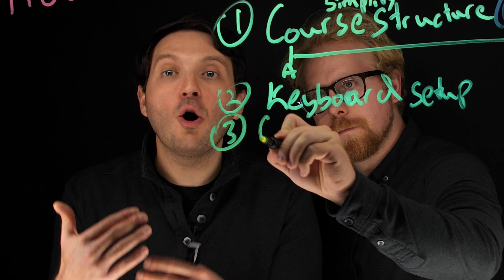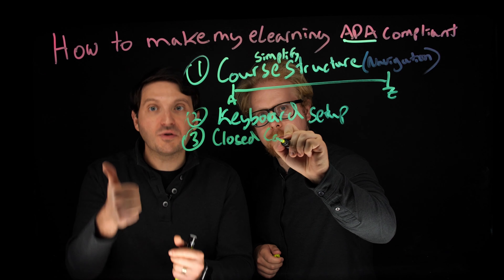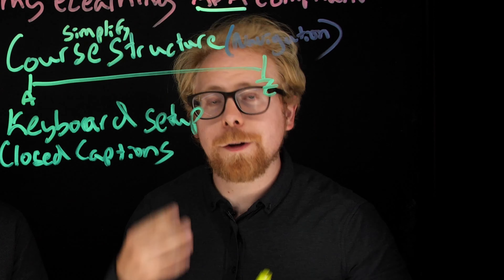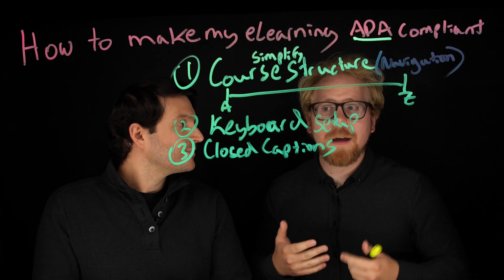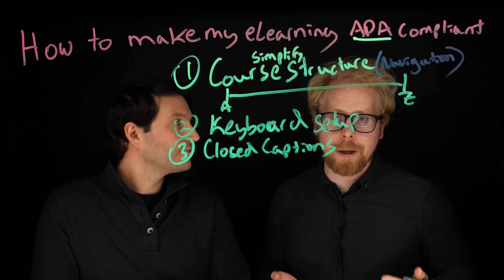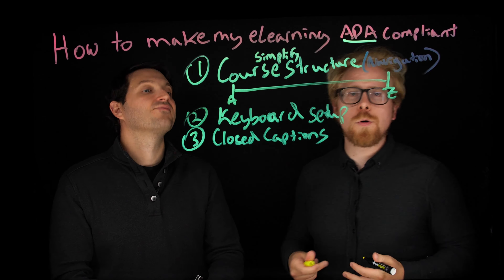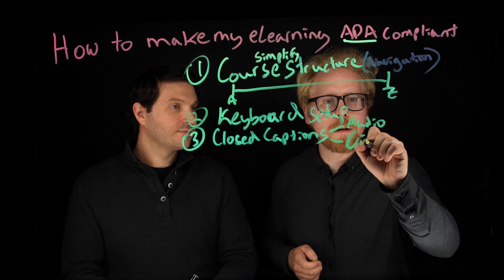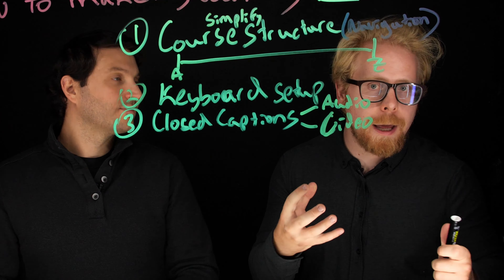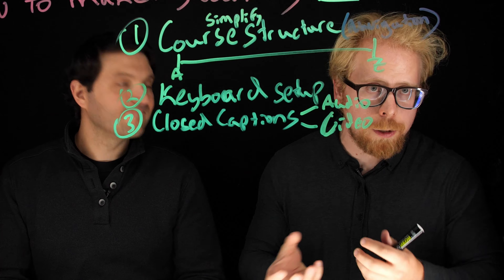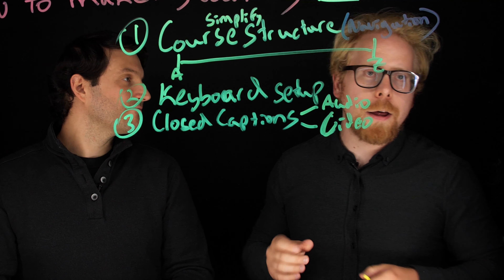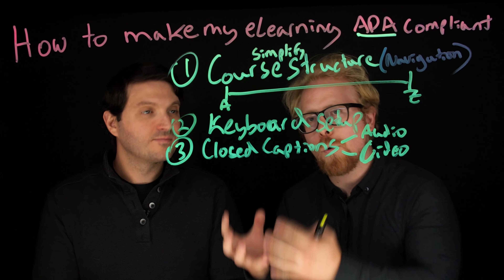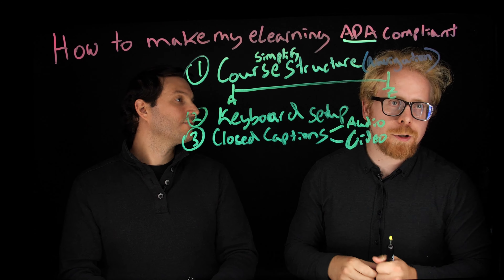The third is closed captions — closed captions for audios and for videos. This is absolutely critical. There are people out there that can't hear, and in addition, there are people that just learn better by reading. So when you have a video or an audio file, you want to make sure that you have a text version of that. If you're creating authored e-learning, every video and every audio segment needs to have correlated closed captioning availability.